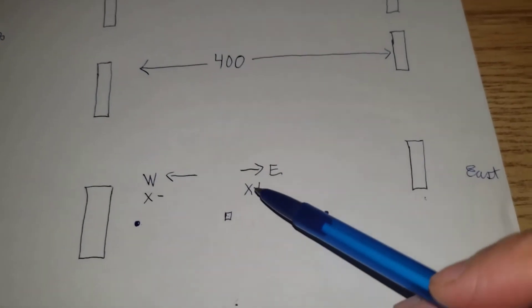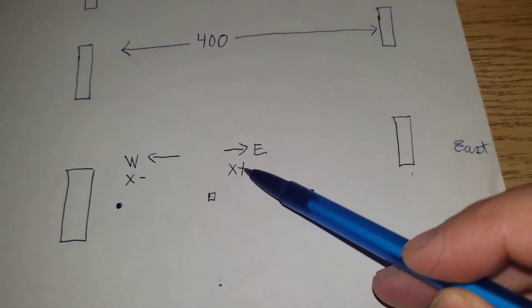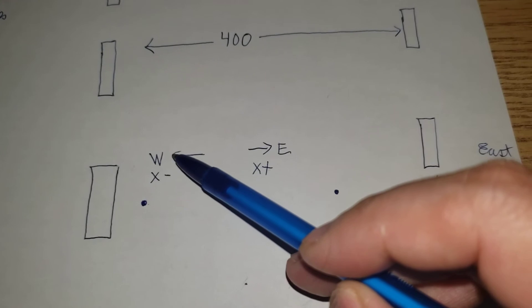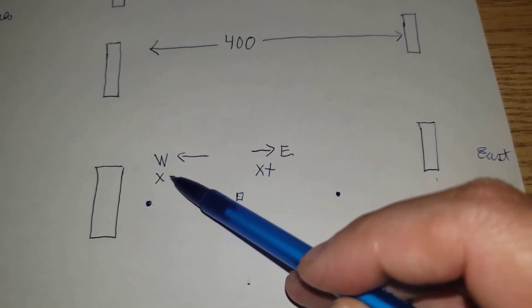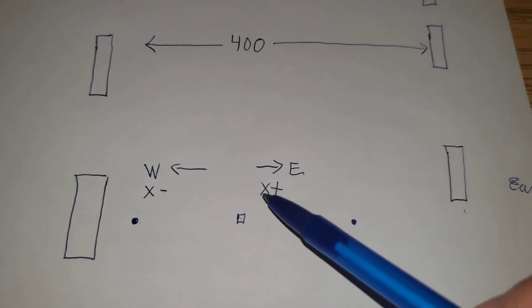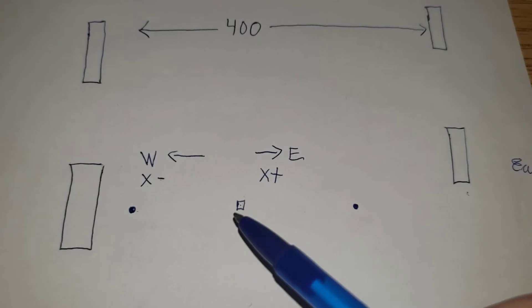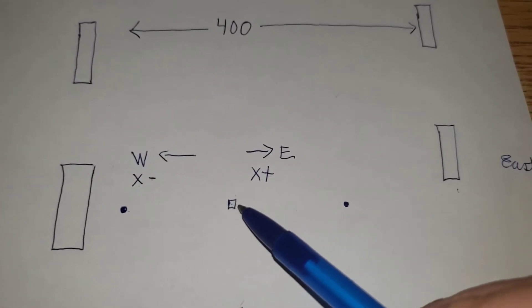So you're going to choose to go east or west. If you go east, your x coordinates are going to go up. If you go west, your x coordinates are going to go down. So personally, I prefer to go east and have the x coordinates go up. That's a personal choice.